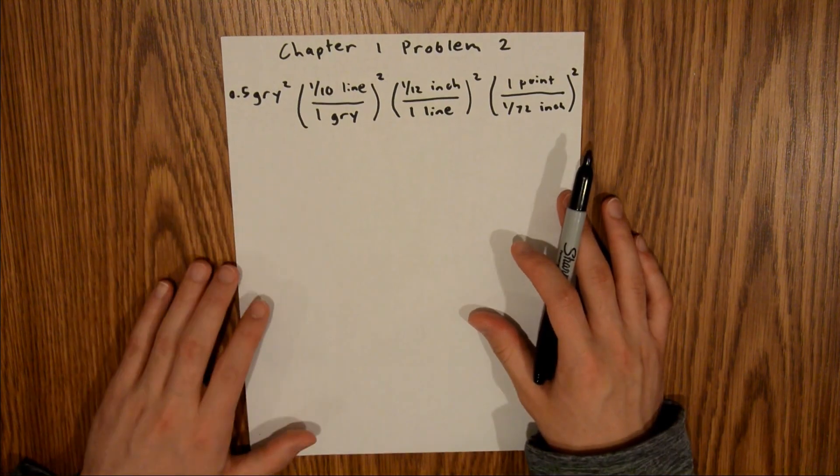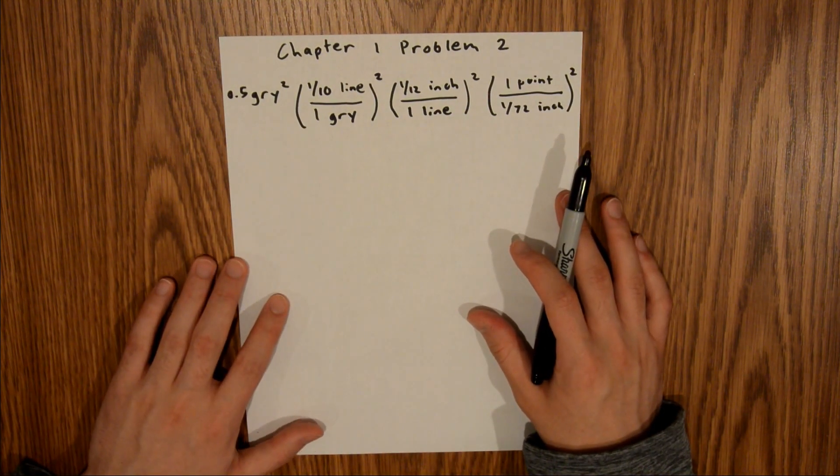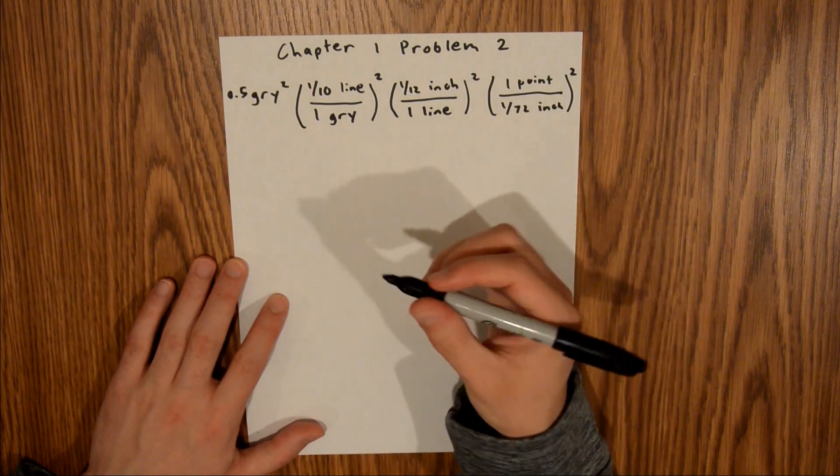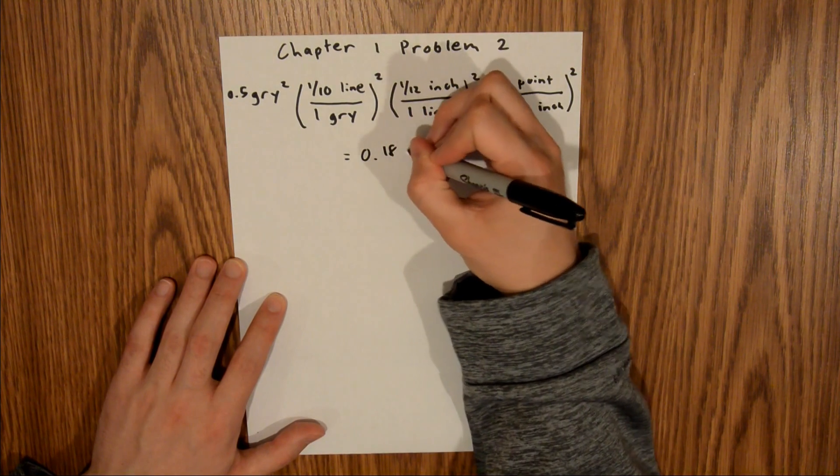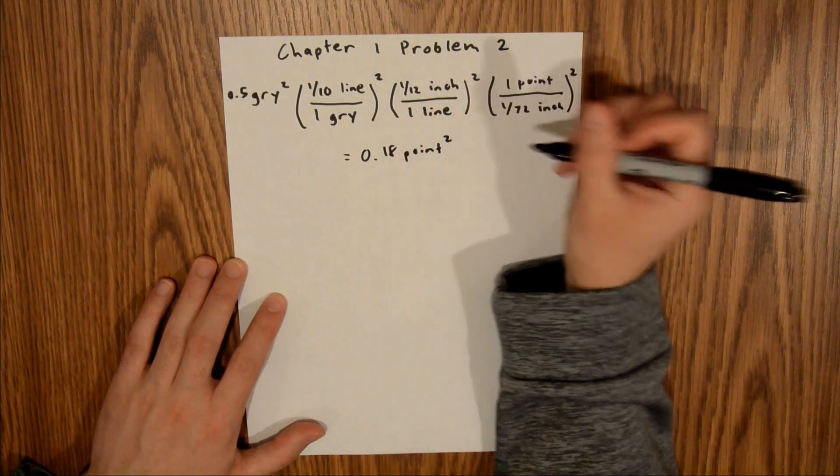If you plug that into your calculator, you'll find that half of a GRI squared is equal to 0.18 point squared.